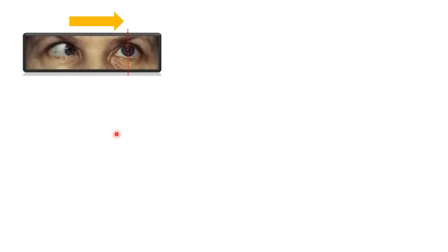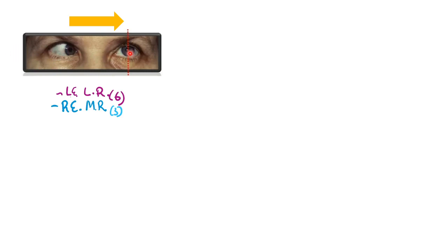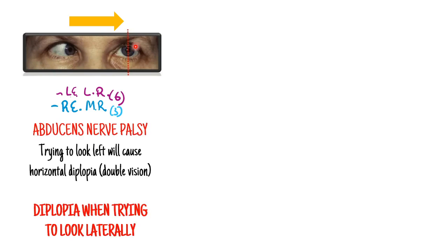That's something you can be examined on. For example, if you ask the patient to look to their left and this is what you see - have a think about which nerve is affected. Starting with the ipsilateral left eye: it's the lateral rectus. The right eye looking towards the nose: it's the medial rectus. But clearly the left eye is not able to abduct. So the pathology is in the left abducent nerve - an abducent nerve palsy.